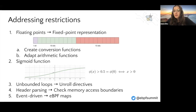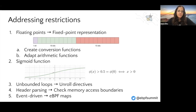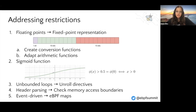About the loops, we can load them into the kernel unrolled. About the header parsing process, it is really important to check the memory access boundaries to ensure that we are not accessing a forbidden part of the kernel. Finally, about the event-driven behavior, we can use eBPF maps to store information between executions.